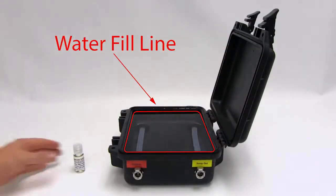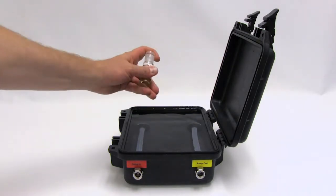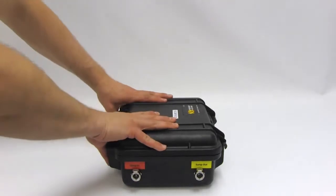Fill the sump with water to its fill line. Every time you fill the sump, add four drops of algaecide solution to the water. Close and secure the sump lid. Place the sump on the floor.